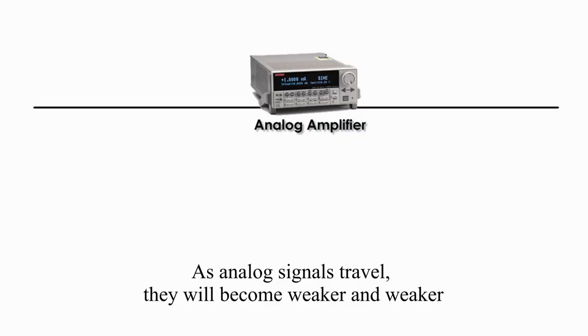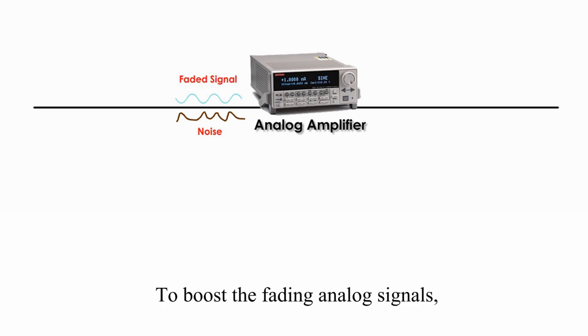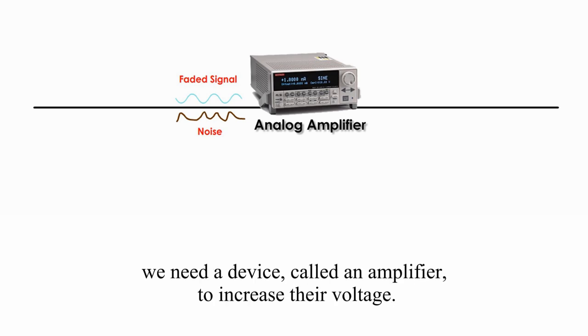As analog signals travel, they will become weaker and weaker. To make things worse, all kinds of interferences would create noises. To boost the fading analog signals, we need a device called an amplifier to increase their voltage.